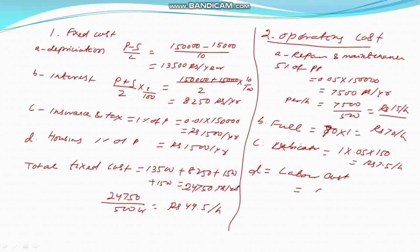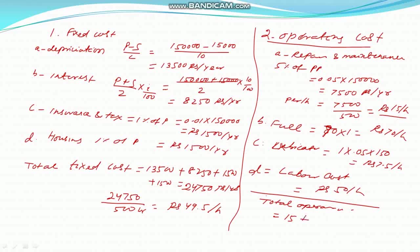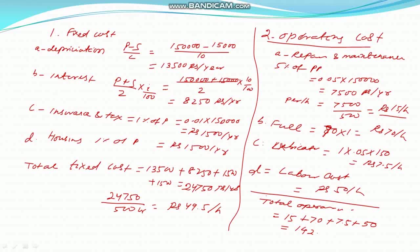Total operating cost per hour equals repair and maintenance (15) plus fuel cost (70) plus lubrication (7.5) plus labor (50), which equals 142.5 rupees per hour. Fixed cost is 49.5 rupees per hour. Therefore, total cost equals 142.5 plus 49.5, which equals 192 rupees per hour. This is the hourly cost of the power tiller.